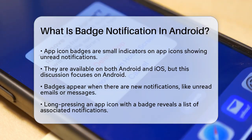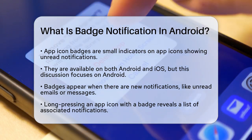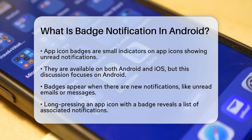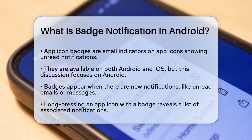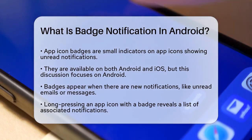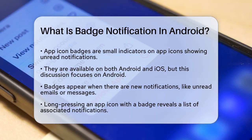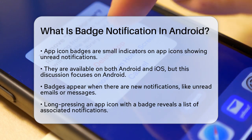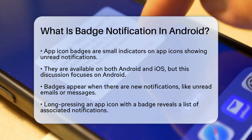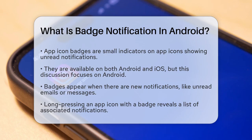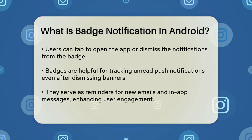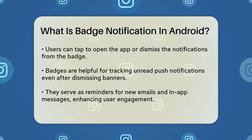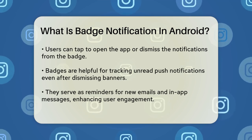How do they work? App icon badges appear when there are new notifications for an app. For example, if you have unread emails or messages, you'll see a number or a dot on the corner of the email or messaging app icon. This number indicates how many unread messages or notifications you have. When you long press the app icon with a badge, you'll see a list of the notifications associated with that app. You can then choose to tap on the notifications to open the app and read them, or dismiss them if you're not interested.